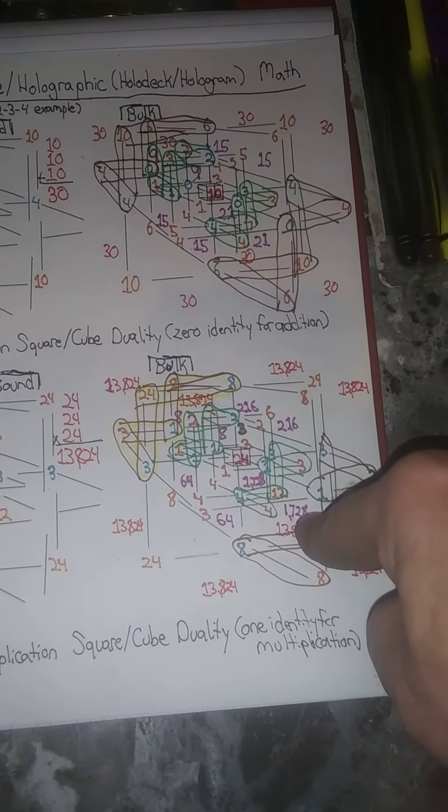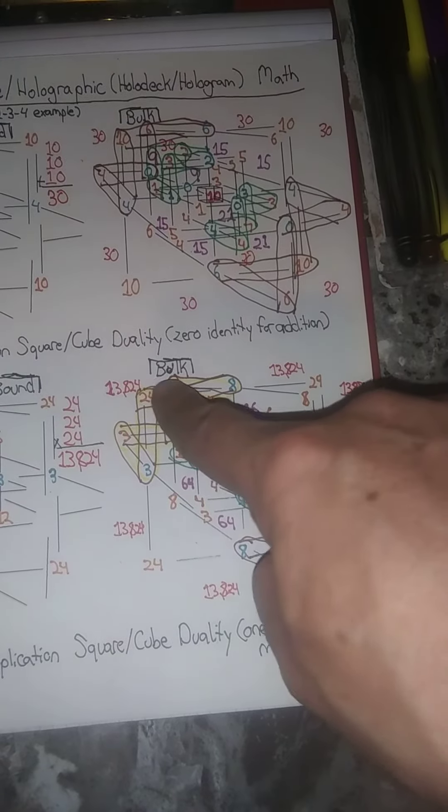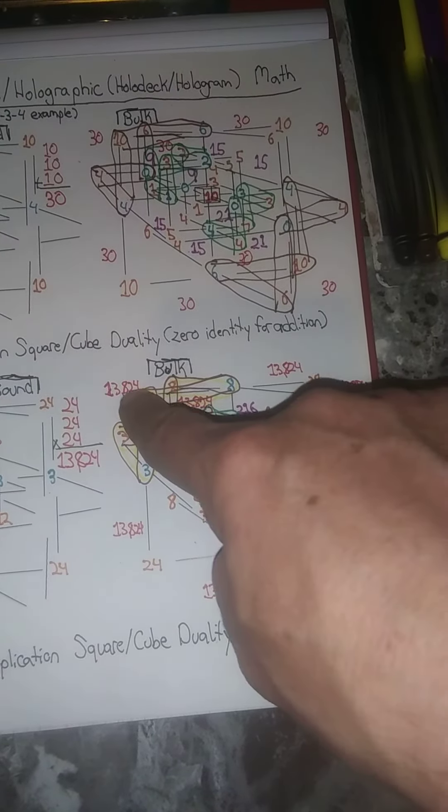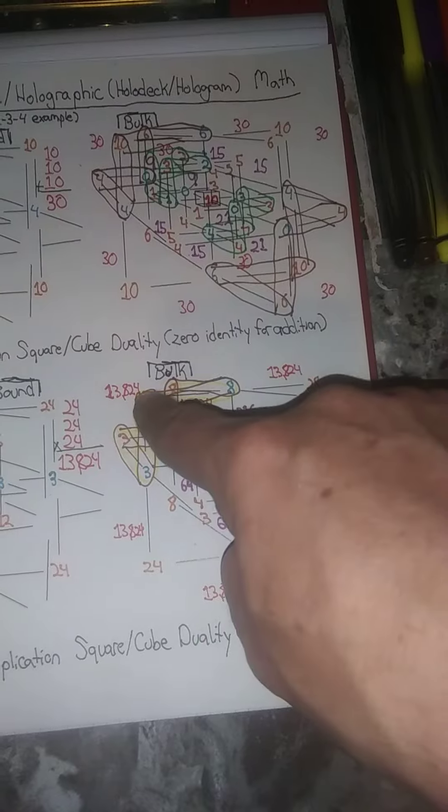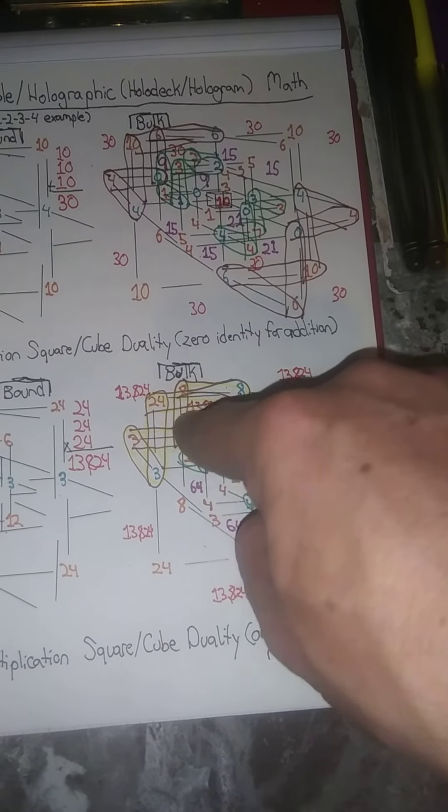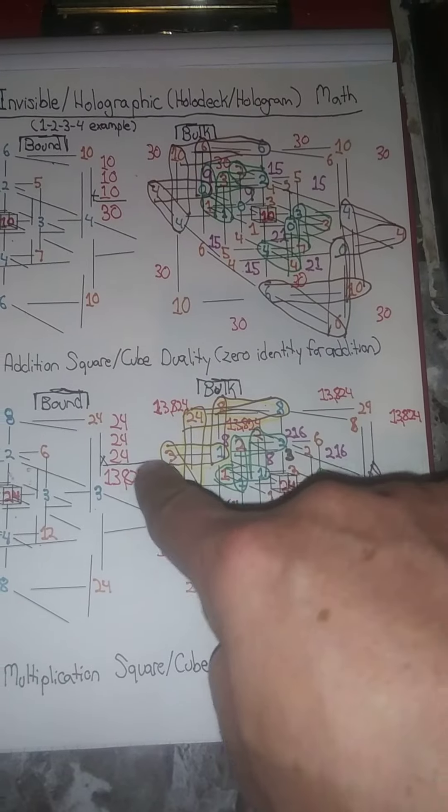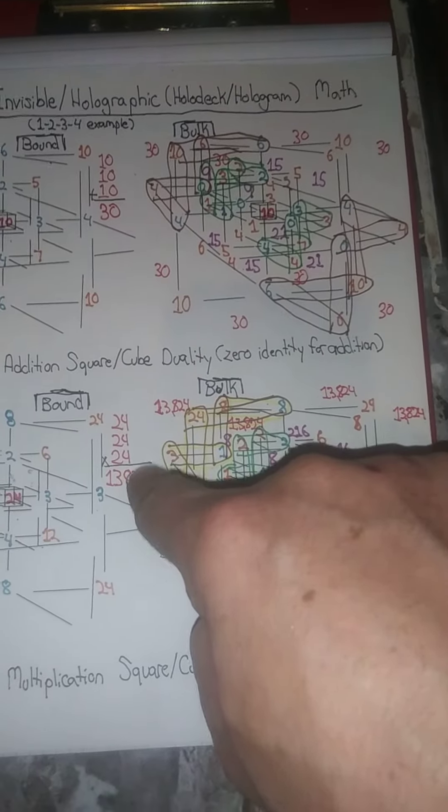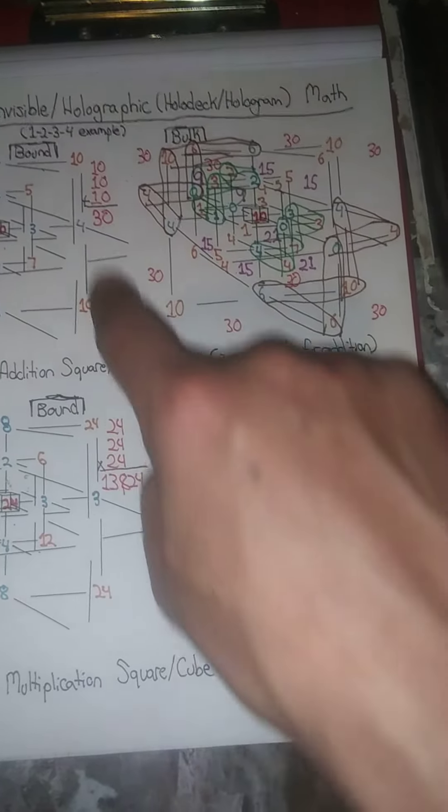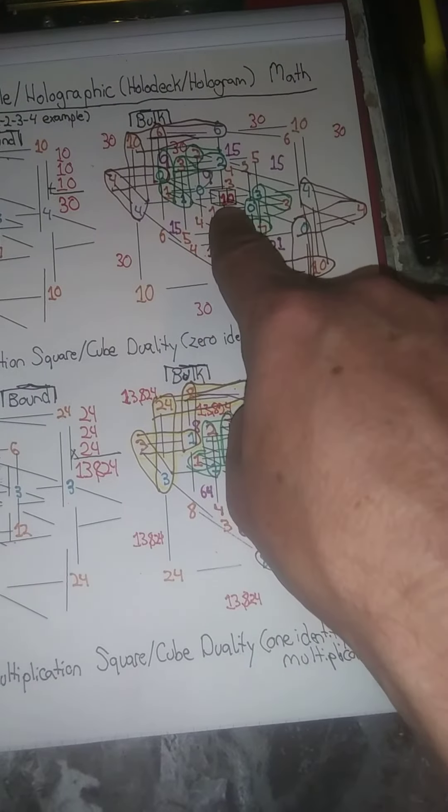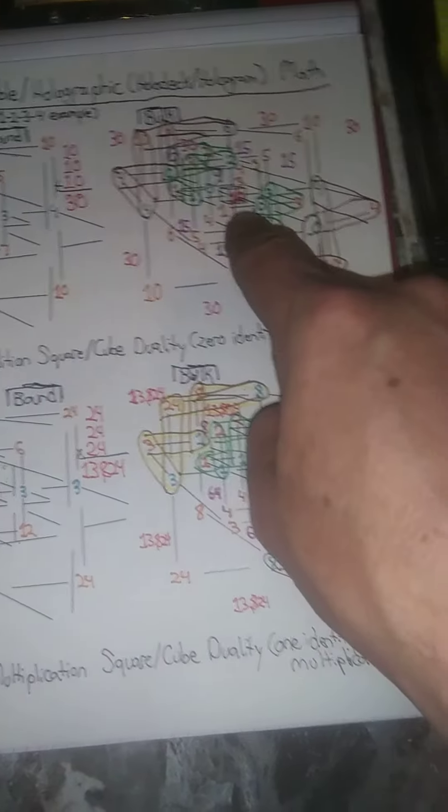So too does the cubic ghost numbers on the outer side as reference to themselves. So too does the ghost numbers multiplied or adding, so there's a trifold there too.